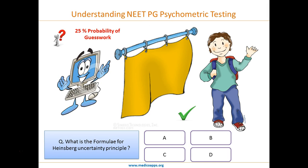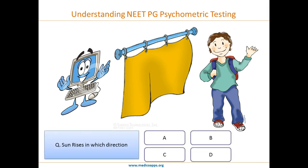This is important and this is what psychometric testing does — it incorporates this guessing element. So what it does is ask another question. This time it is a simple question, like: in which direction does the sun rise? And the student gets this wrong.